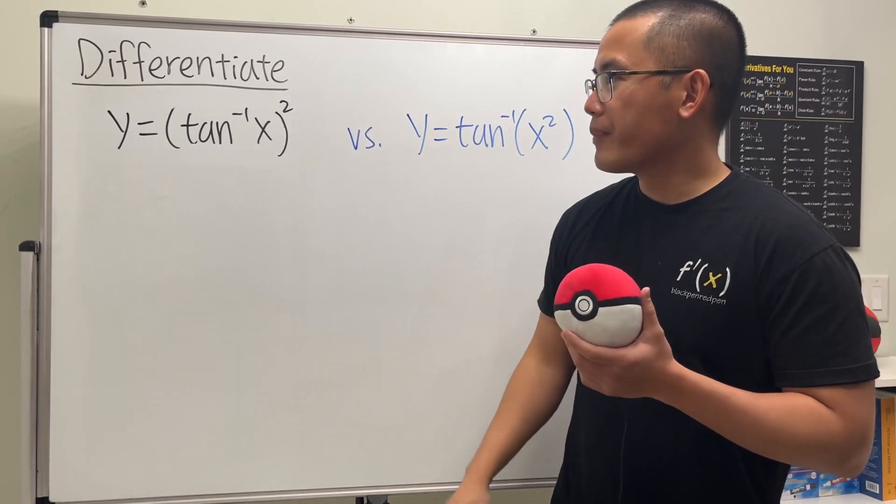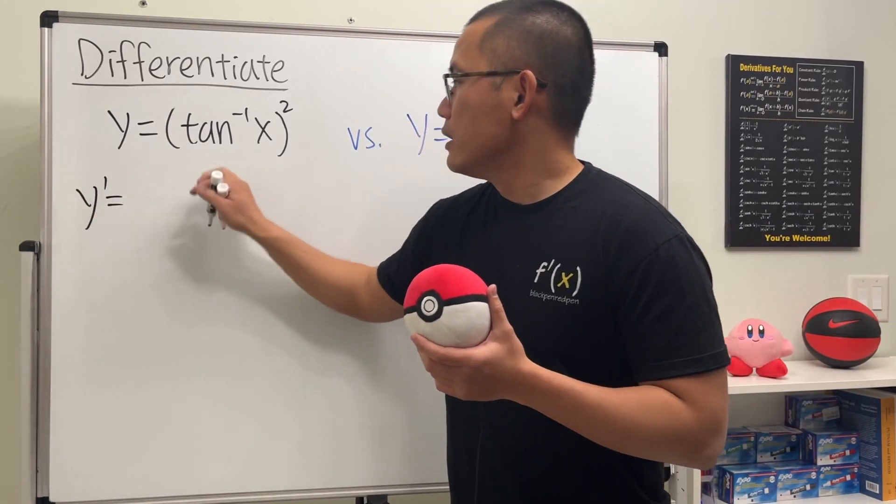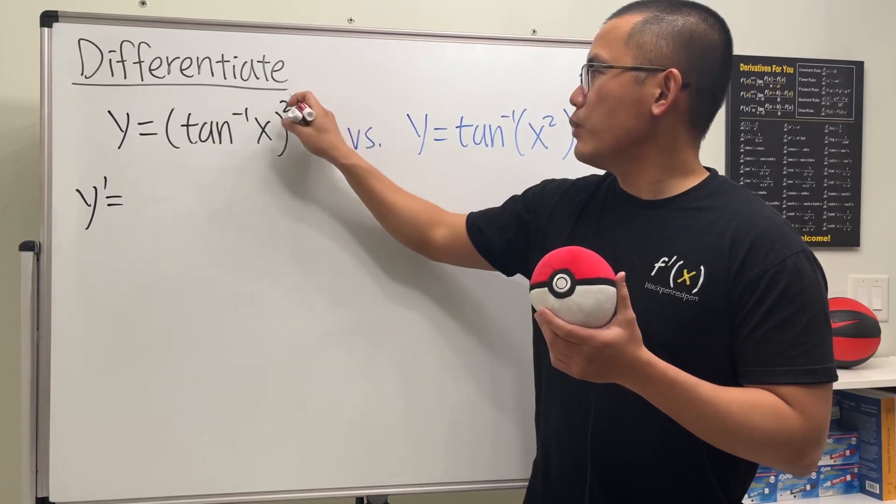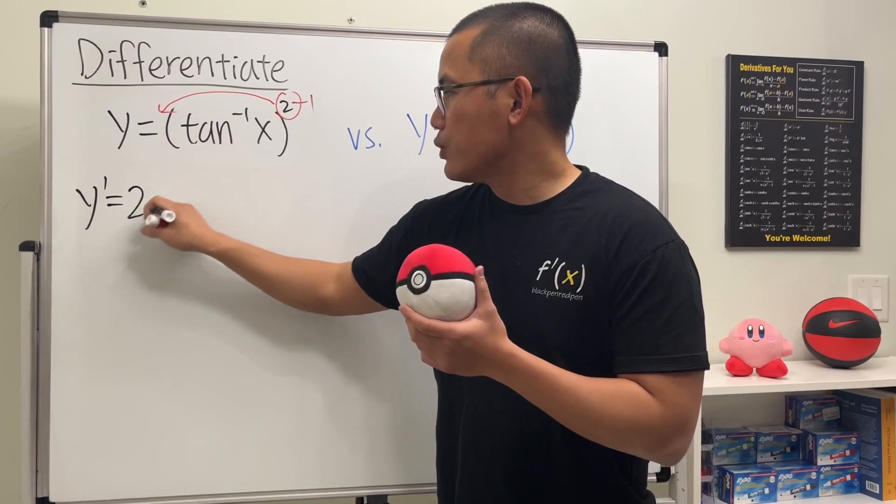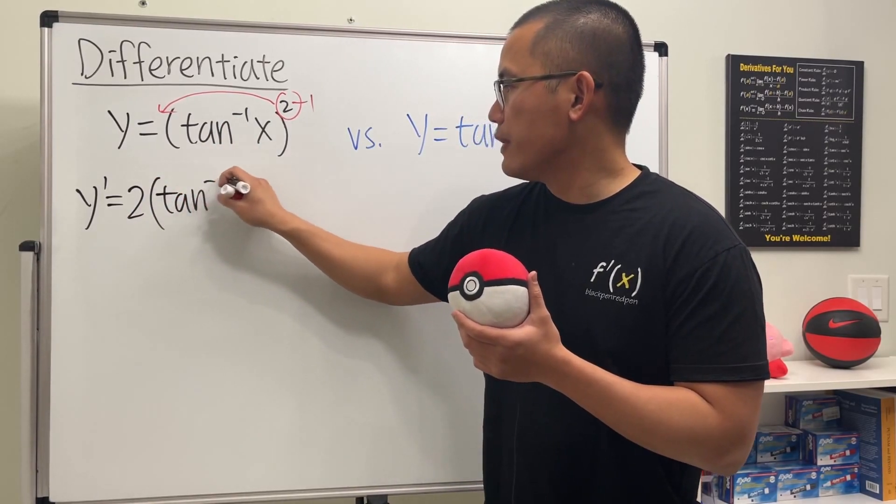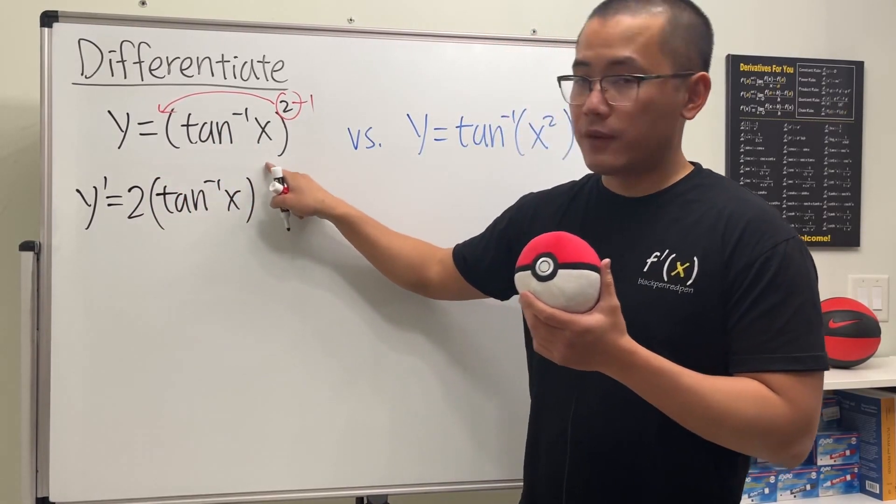Anyway, let me write down y prime. Differentiate this to the second power - we'll bring the power to the front minus one. So we get two times the parentheses with inverse tangent of x inside, and then raise to the first power.